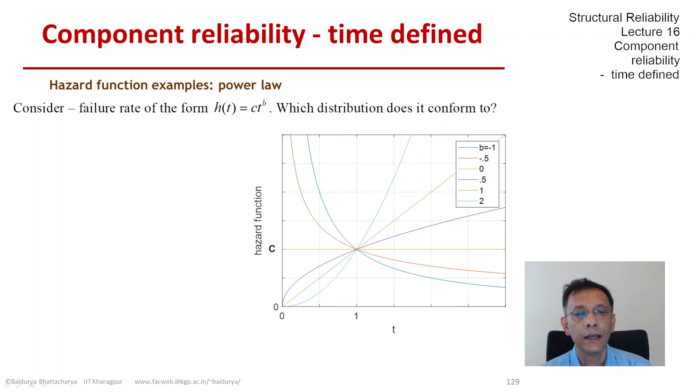But what about the others? For b greater than zero, we have an increasing type hazard function. You can see b values of 0.5, 1, and 2, and they are all of an increasing nature, rising faster and faster as b increases.